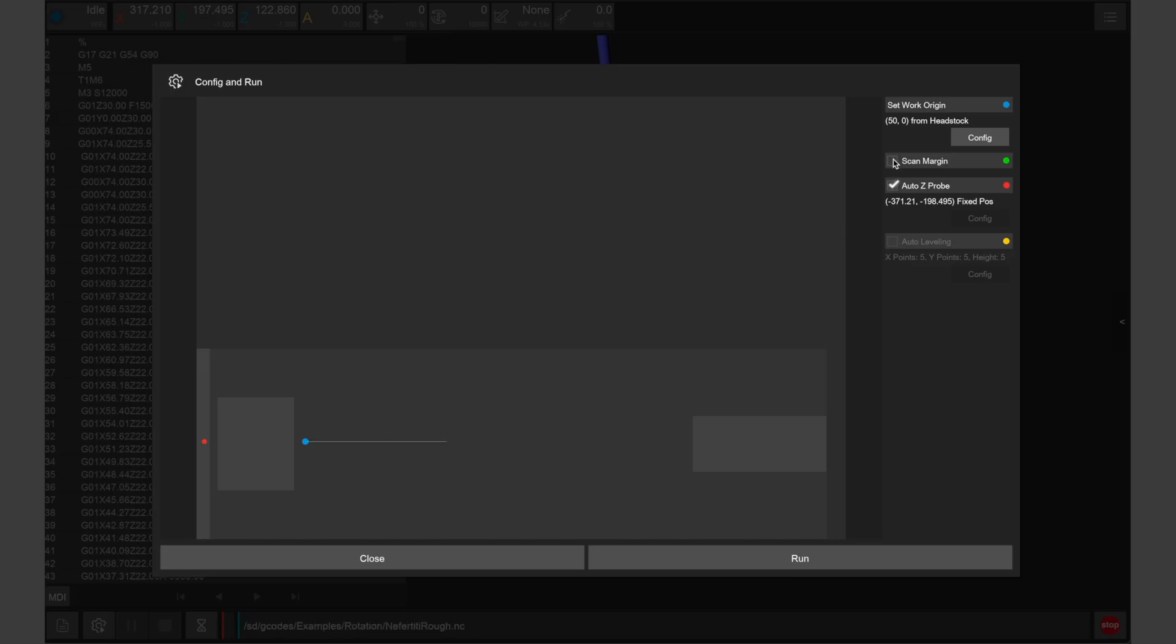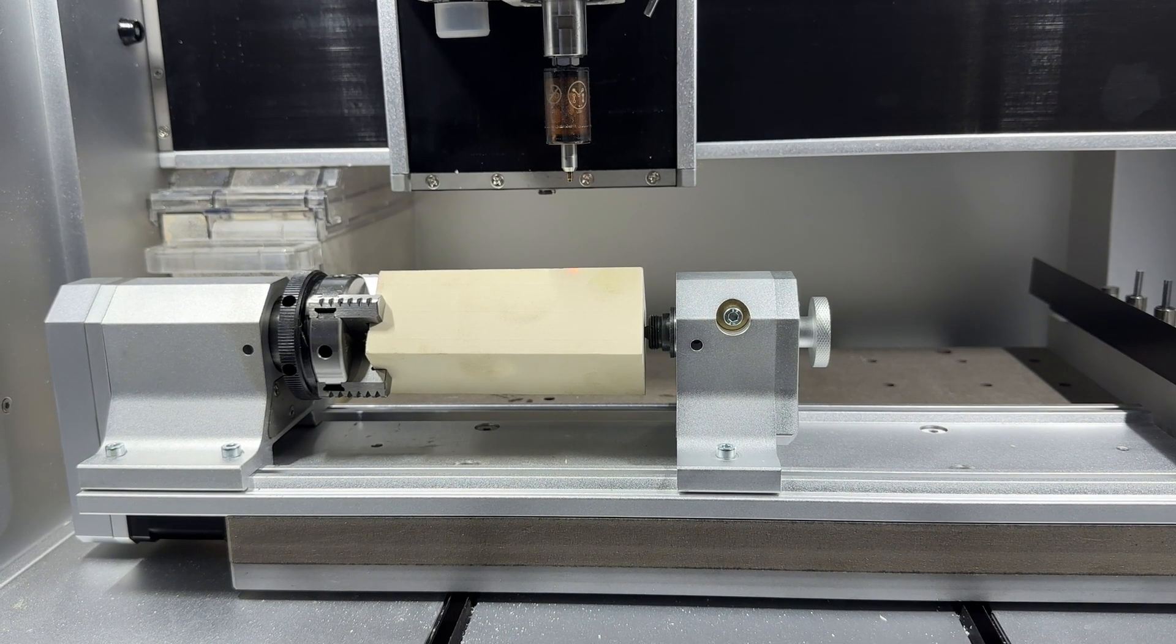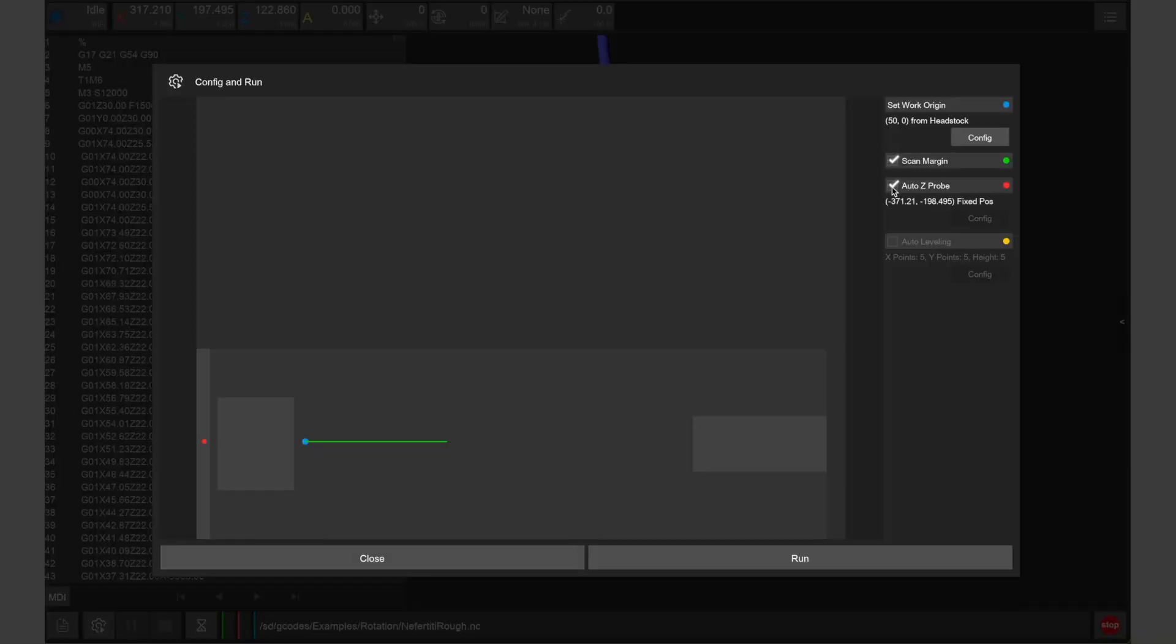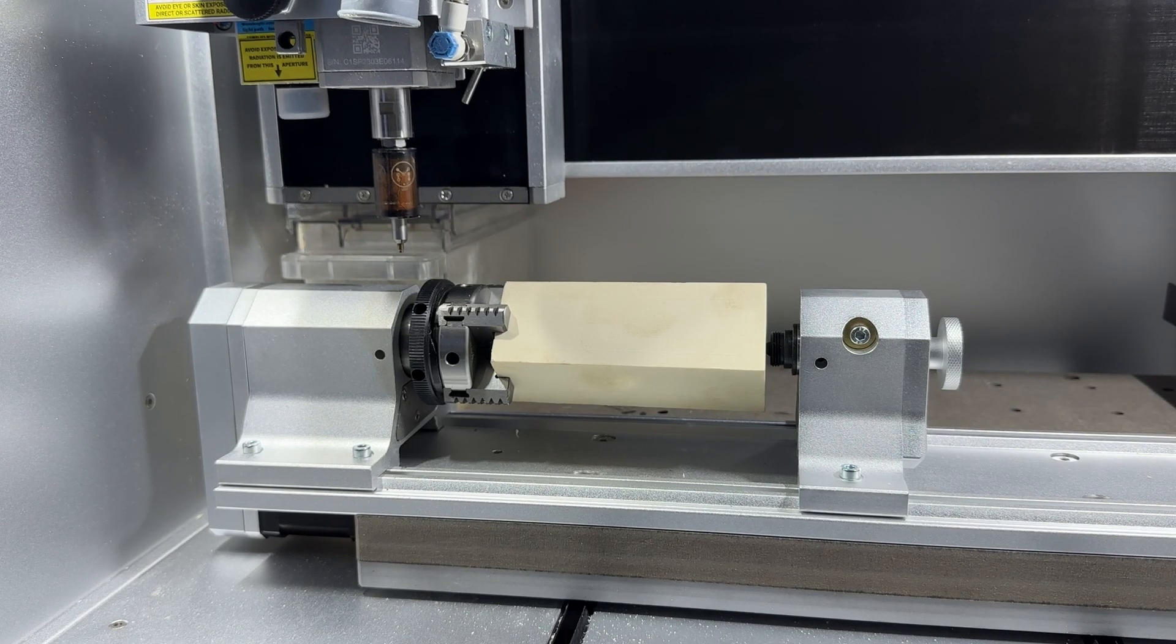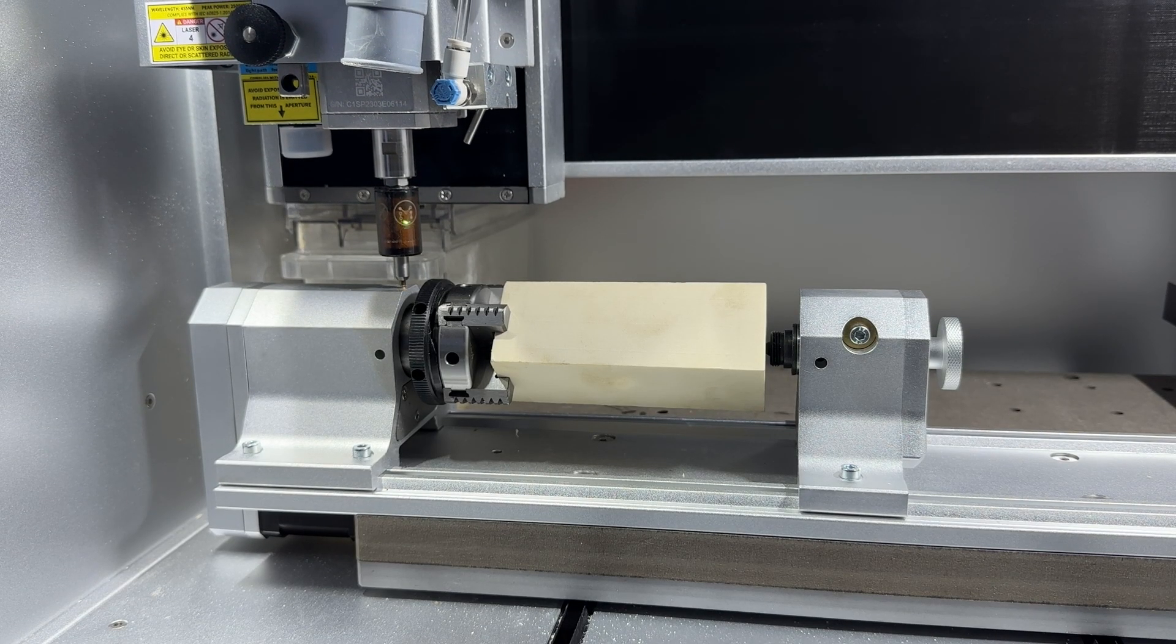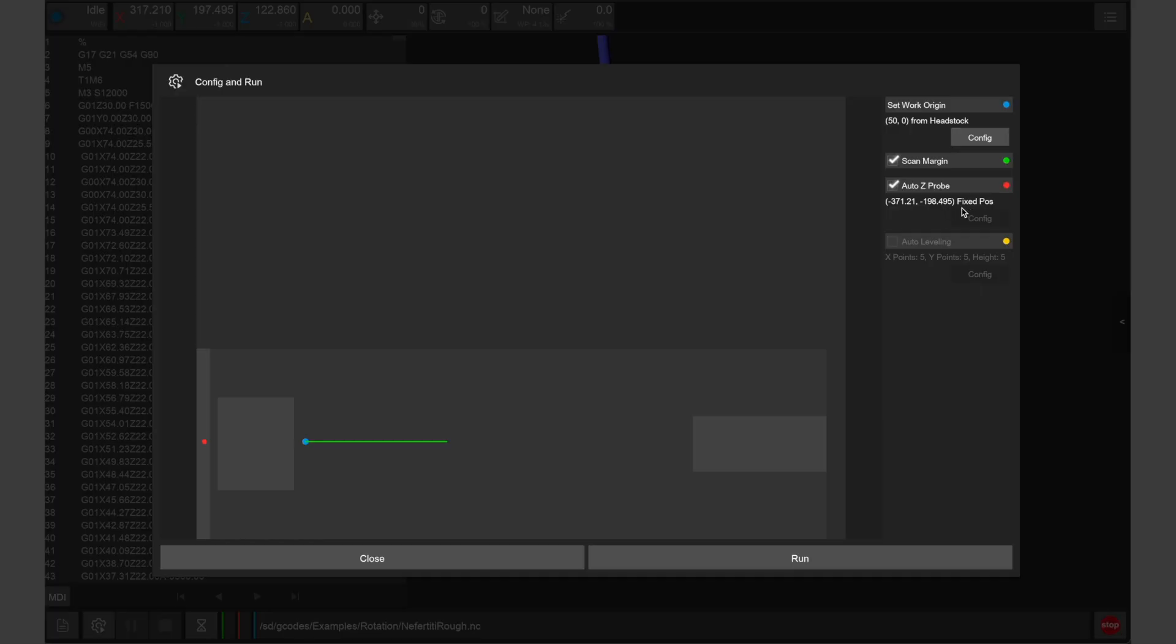Scan margin can be enabled which will trace the length of our part using the laser pointer before machining. An auto z probe should also be enabled which will be set to a fixed position specifically for the fourth axis module. Auto leveling is not used for fourth axis designs.